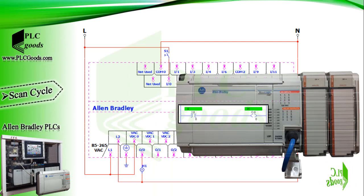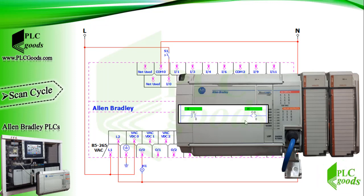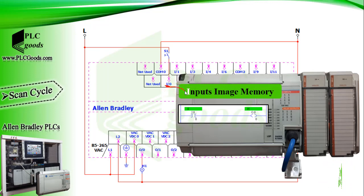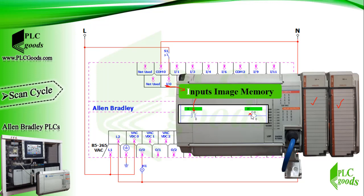In the previous video I used my Micrologix 1500 and its connected switch to turn on a lamp. Now let me explain how a PLC executes its program. When a PLC is in run mode, it stores the state of digital inputs and all other connected inputs such as analog inputs in what is called the input image memory. The PLC processor then continually solves the user logic program based on the current input image memory.